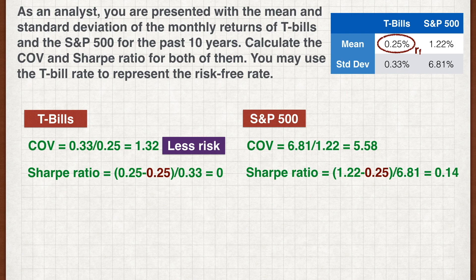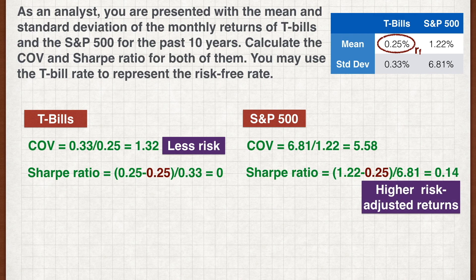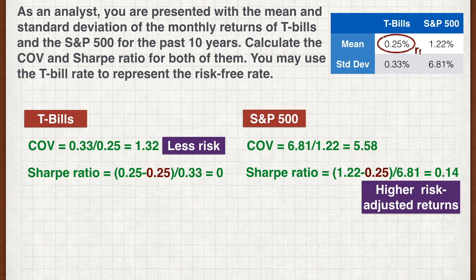In comparing the Sharpe ratio, the S&P 500 gives a higher risk-adjusted return than T-bills because it has a higher ratio. Note that the Sharpe ratio can be negative if the average return of the asset is lower than the risk-free rate. If that's the case, the risk-adjusted return of that asset will be lower than T-bills.